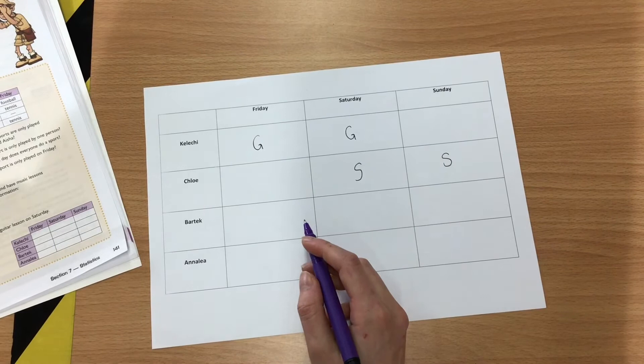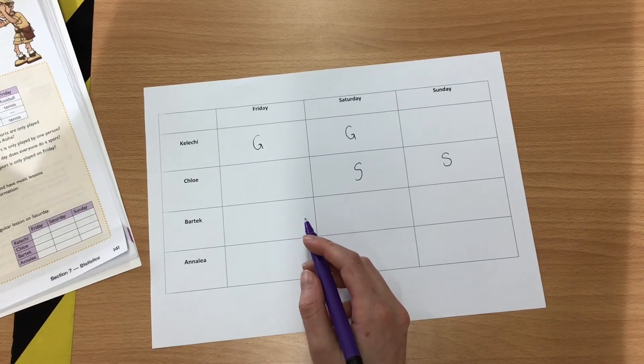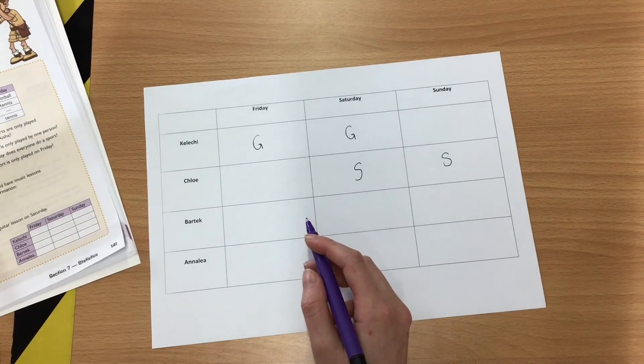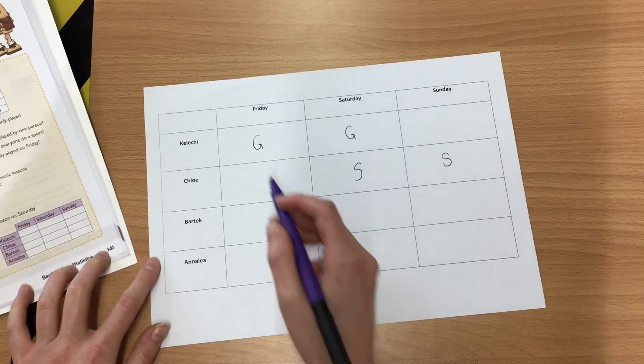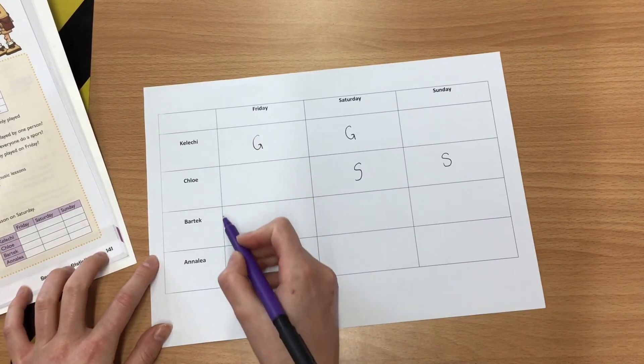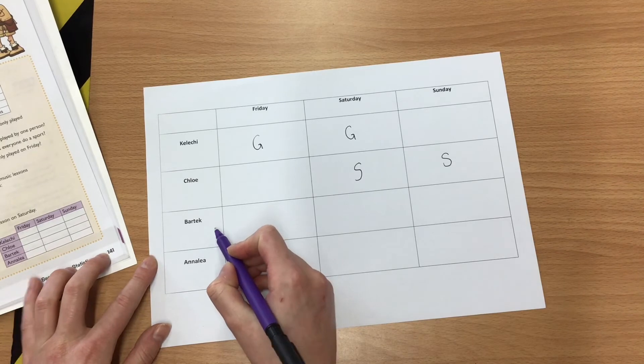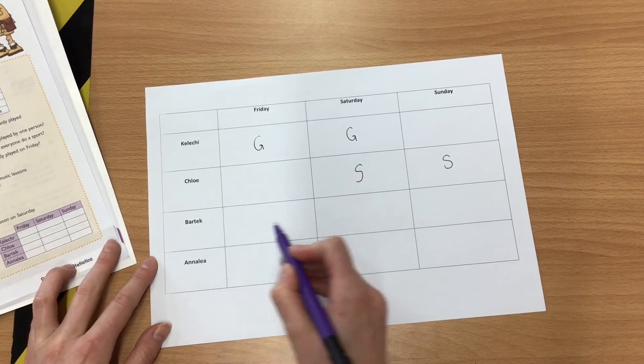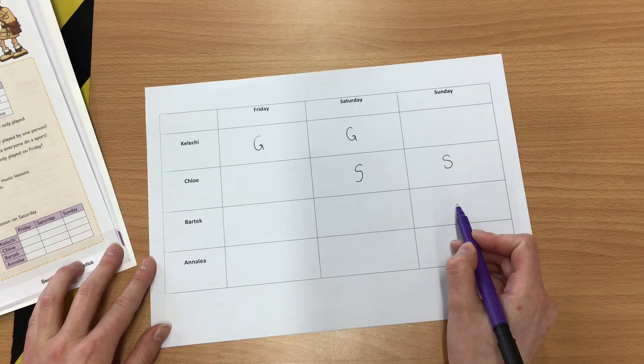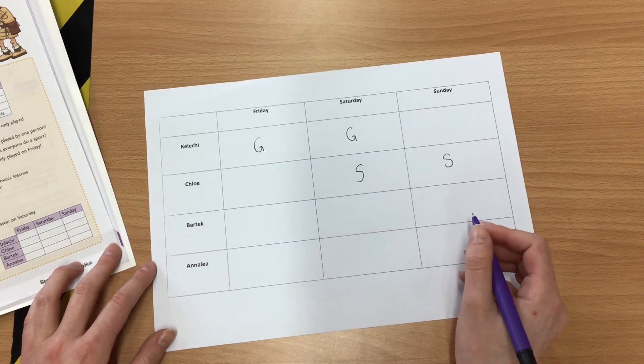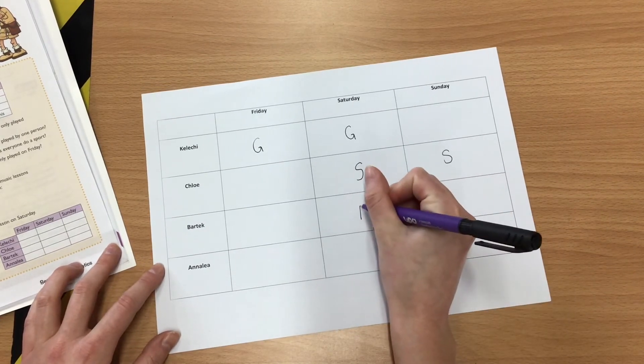And then it says, Bartek has a drumming lesson on Saturday and Sunday. So I need to find Bartek. I go down to Bartek and I go across to Saturday and Sunday. It says he has a drumming lesson, so I put a D.